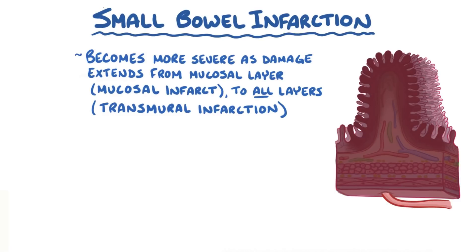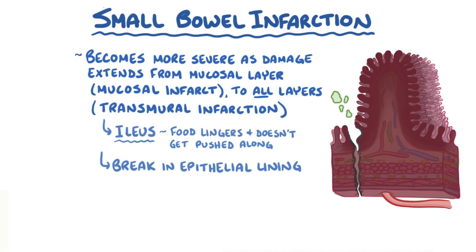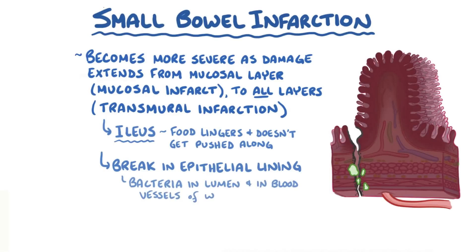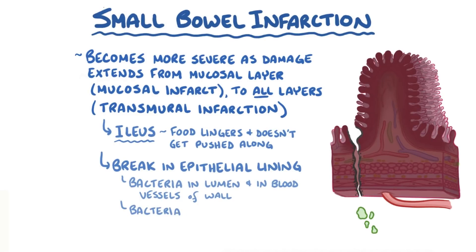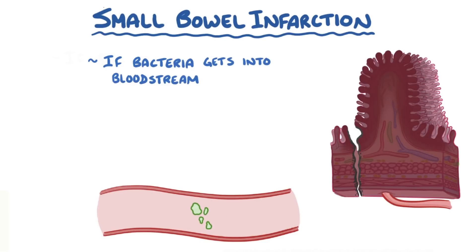Early on, bowel ischemia can make the bowels simply not work, resulting in an ileus, where food lingers and doesn't get pushed along. Severe damage to the small intestines can also cause a break in the epithelial lining of the small intestines, allowing bacteria in the lumen to get into the blood vessels in the wall. Alternatively, bacteria can completely cross the small intestinal wall and get into the peritoneal space, and from there get into the lymphatics or blood vessels. Ultimately, if bacteria get into the bloodstream, then it can lead to a massive inflammatory response called sepsis.